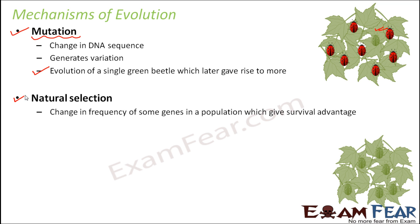The next mechanism is natural selection. There might be some trait which gives some advantage for that organism to survive better in the environment, and nature will support that change. Using the same example: the green beetle was formed as a result of mutation, but after it was formed it was observed that the green beetle is advantageous over the red beetle because it can protect itself from predators — so there is a survival advantage. That is where natural selection comes in. As a result of natural selection, the probability of formation of more and more green beetles increases.